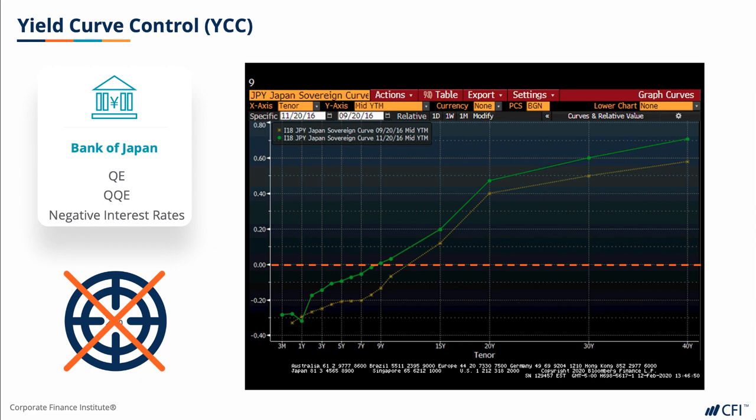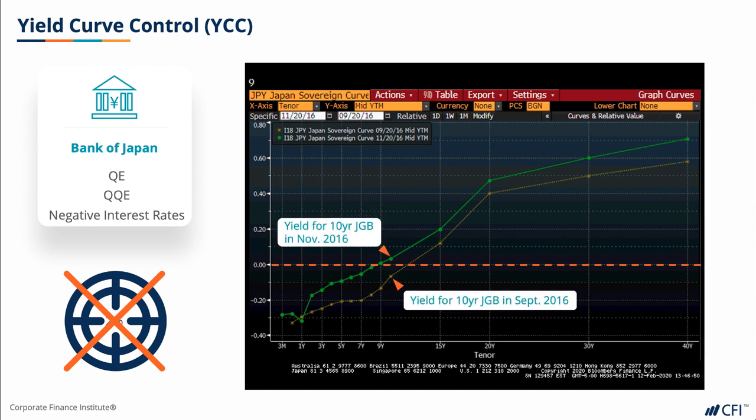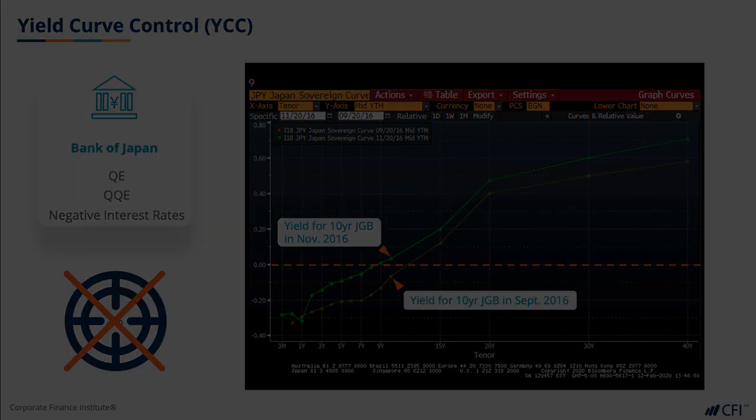It did have the intended effect in the short term, as you can see on the Bloomberg chart on the right-hand side, as 10-year JGB yields did rise above 0%. However, in the medium run, the jury is still out on the efficacy of YCC, as 10-year JGB yields have slipped back into negative yield territory since then.